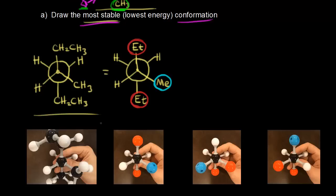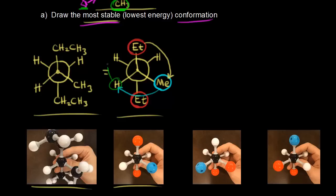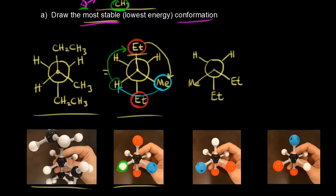The Newman projection we drew matches the picture from the video. This is the same Newman projection — I just made the ethyl groups red and the methyl group blue. In the video we rotated the front carbon and held the back carbon stationary. So the ethyl group in red moves to a new position, the methyl group in blue moves over, and the hydrogen moves to its new position. In the next staggered conformation, we can see our two ethyl groups are now gauche to each other, with the methyl group over to one side.